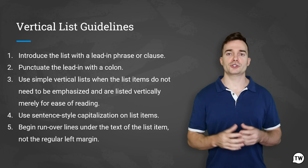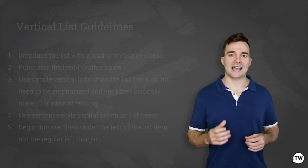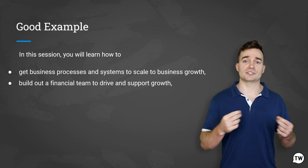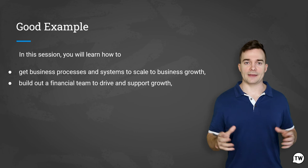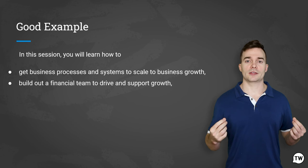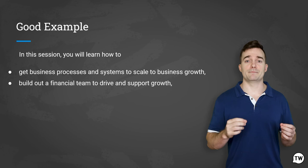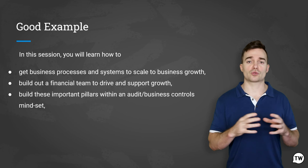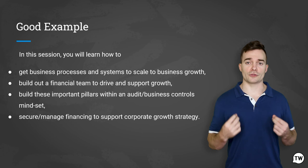Avoid producing vertical lists in which two or more items begin with the same word or words — for example, starting each item with 'how to' is redundant. To revise, incorporate the recurring word or phrase into the introductory phrase and revise the list items so they conform with each other. For instance: 'In this session, you'll learn how to: get business processes and systems to scale business growth; build out financial teams to drive and support growth; build these important pillars within an audit business control mindset; and secure managed financing to support corporate growth strategy.' The 'how to' is removed from each individual item.